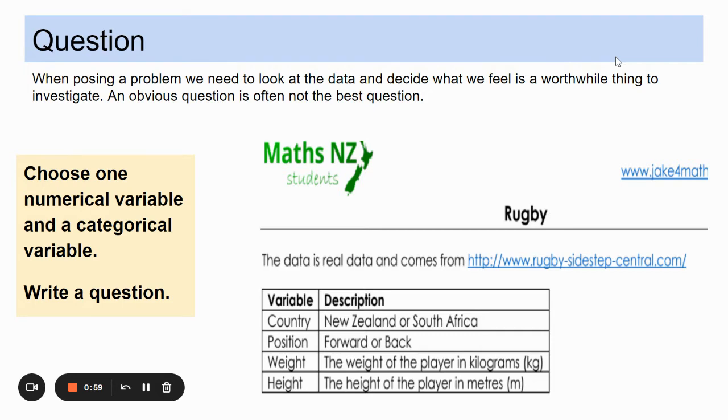So I have decided to go for the height of the backs versus the forwards. We're trying to compare two groups and one number. I wonder if the height in metres of rugby backs tends to be taller than the height in metres of rugby forwards from the 2013 Springbok and All Black squads. I'm comparing those two groups. My numerical variable is the height in metres, categorical variable is backs versus forwards.